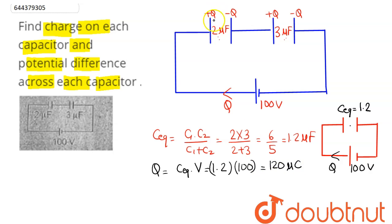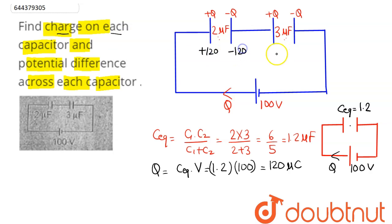This is the charge appearing on each capacitor. So the charge on each capacitor is 120 microcoulombs — that is, +120 microcoulombs on one plate and −120 microcoulombs on the other. Similarly, for the second capacitor, it is +120 microcoulombs and −120 microcoulombs.